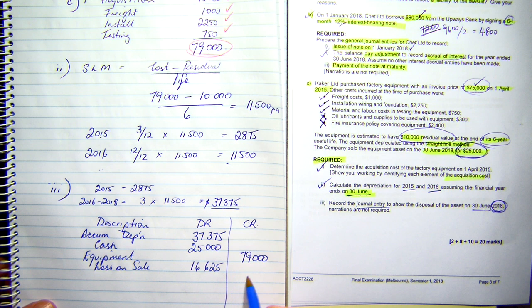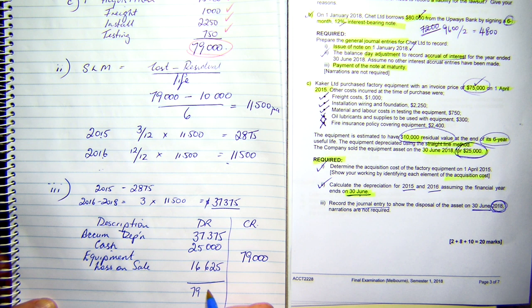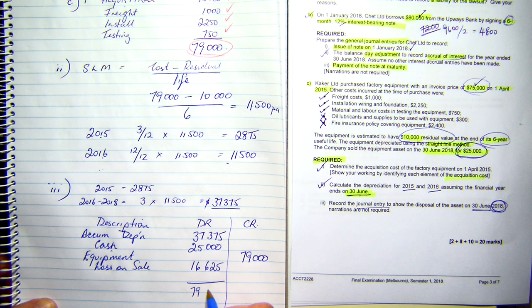That gives me my journal. My disposal on sale. Now, the way I did that was I just made sure my journal balanced. If I add this side up, I get 79,000. Add this side up, I get 79,000 as well. My journal must balance. Therefore, I've obviously made a sale. If I was on the credit side here, I would be making a gain on the sale.